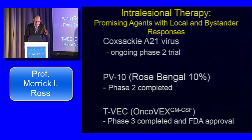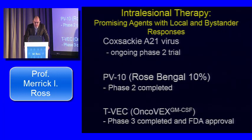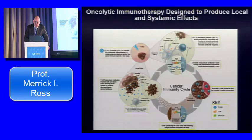I'll discuss three agents, mostly the two I've dealt with directly in pivotal clinical trials. Coxsackie A21 virus is in an ongoing phase 2 trial. PV10, a 10% rose bengal chemical agent, has completed phase 2 with a phase 2 combination opening and a phase 3 versus chemotherapy for patients who have failed checkpoint blocking agents. TVEC, initially called Oncovex GM-CSF, recently received approval from its phase 3 trial. All three have proven local effects as well as bystander responses.